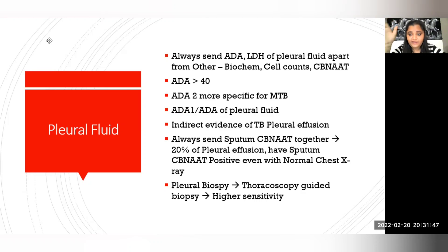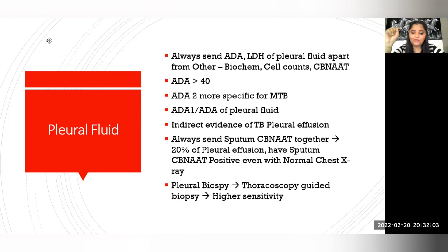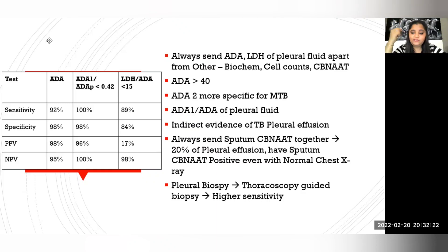20% of pleural effusions have sputum CB-NAT positive even with a normal chest X-ray. Whenever possible, always try to take a pleural biopsy, as thoracoscopy-guided biopsy has very good sensitivity. The ADA1/ADA ratio and LDH-to-ADA ratio show better sensitivity and specificity. LDH and ADA of both pleural fluid and serum need to be sent. It is indirect evidence of TB, so always look for disseminated TB.